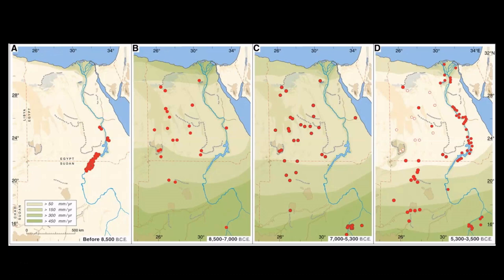Around 8,500 BC the climate began to change - there was significant rainfall and the population began to disperse outside the Nile River Valley. This is the time period I believe the Egyptian pyramids were in operation and producing chemicals, for several reasons: there was significantly more water in the area, and there was also large-scale domestication of cattle in the upper eastern Sahara during this time period - cattle essential to the chemical operations. I believe climate change leading into the dynastic Egyptian period could be one of the factors that led the pyramids to fall out of operation, and they were inherited by the dynastic Egyptian civilization as they began to repopulate the area around 3,500 BC.